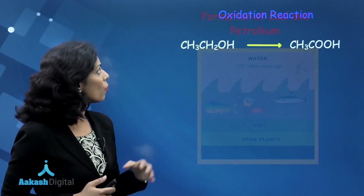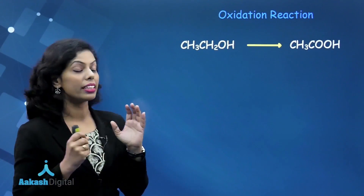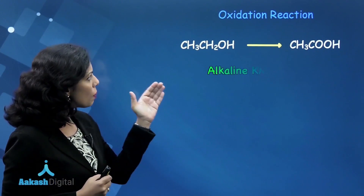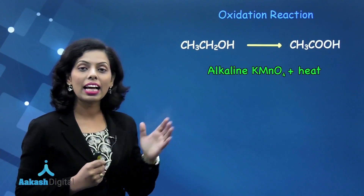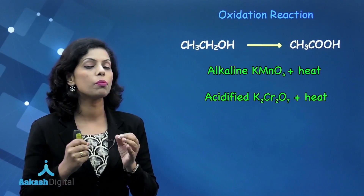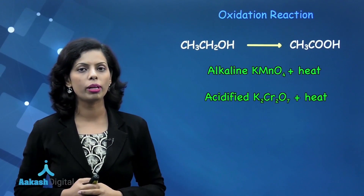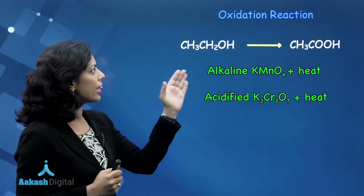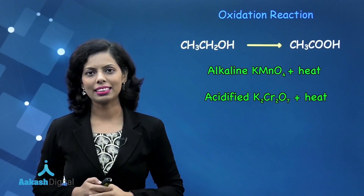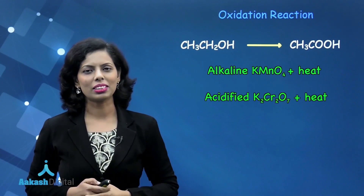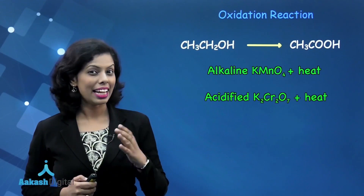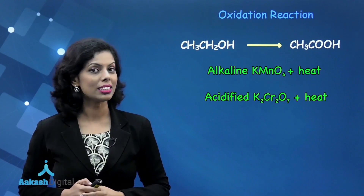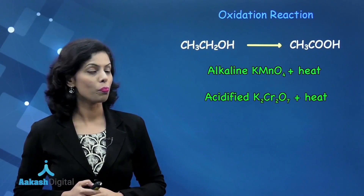We discussed the next reaction — the oxidation reaction. In the presence of alkaline KMnO₄ or acidified potassium dichromate and heating, alcohol can be converted into carboxylic acid. That is the oxidation process. Combustion is also an oxidation process.